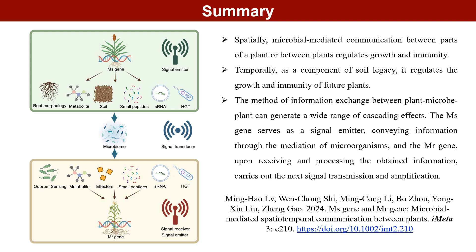Temporally, as a component of soil legacy, it regulates the growth and immunity of future plants. The method of information exchange between plant-microbe-plant can generate a wide range of cascading effects. The MS gene serves as a signal emitter, conveying information through the mediation of microorganisms. And the MR gene, upon receiving and processing the obtained information, carries out the next signal transmission and amplification.